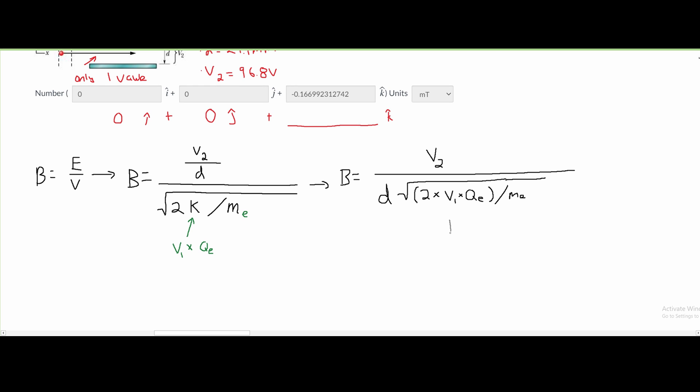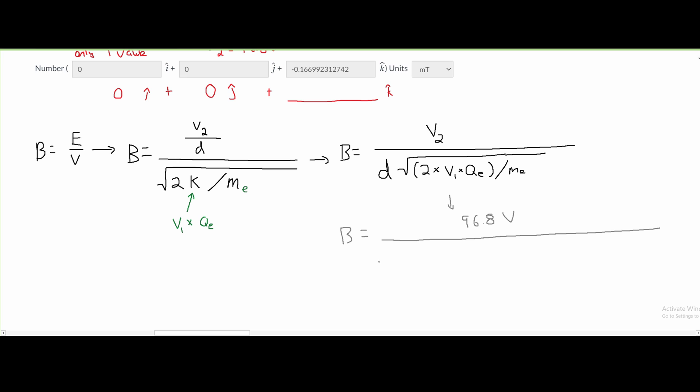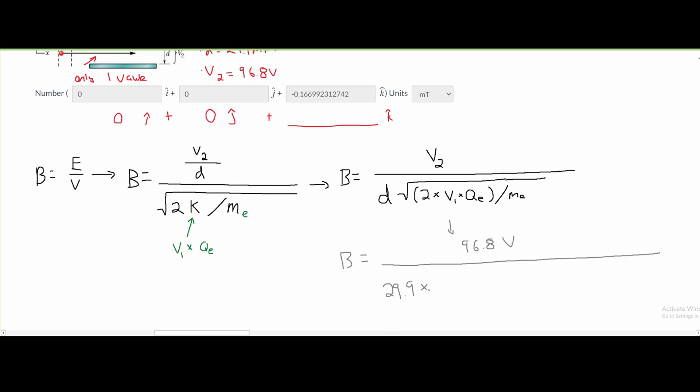If we start plugging in our values, B equals our V2, which is 96.8 volts. We're going to have our d, which is 29.9 millimeters, so we have to multiply this by 10 to the negative 3. That's going to be in meters.